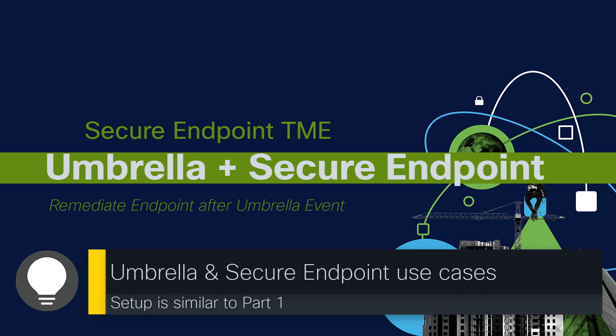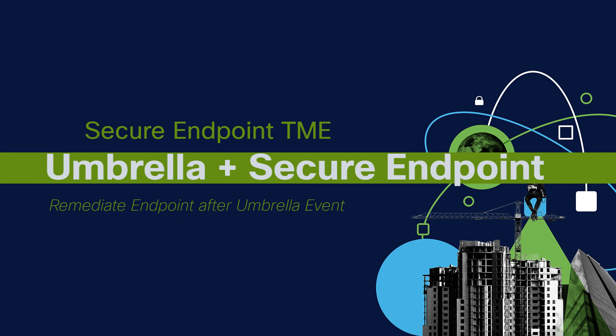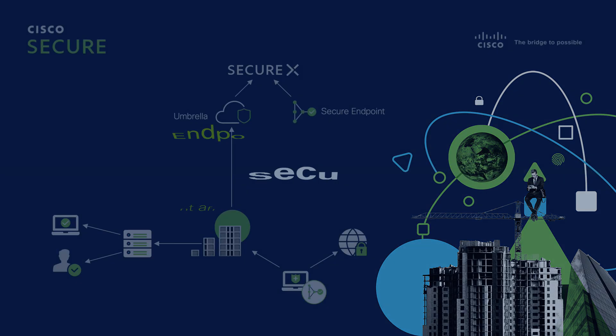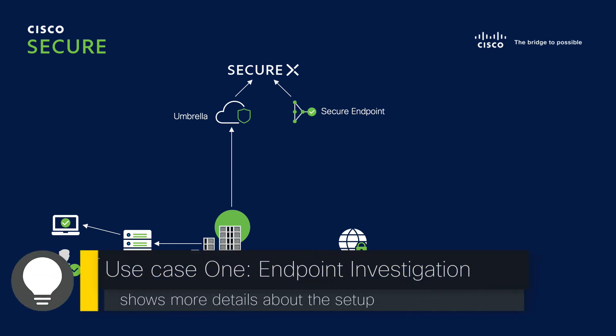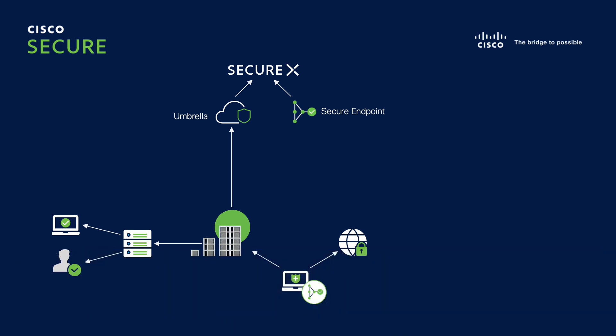As a remediation task we will disconnect an endpoint from the network after Umbrella blocked malicious traffic. The setup for this use case is similar to the previous use case, where we did real-time investigation on the endpoint. Secure X and Secure Endpoint are in place. Based on an Umbrella detection, the demo will show how fast and easy an endpoint can be disconnected from the network.